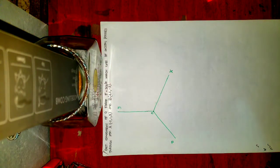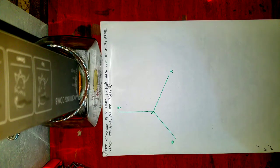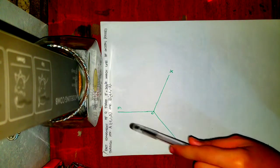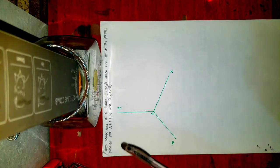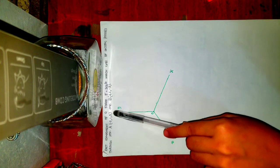Okay, so for our first example, we need to determine the component of a force F, which is 300 pounds, whose line of action passes through points A and B. Given the coordinates, the first thing we need to do is to locate those points. So there are three coordinates given: X, followed by Y, and Z.